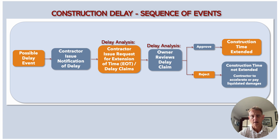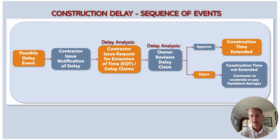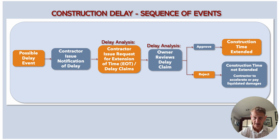The contractor would then need to submit a formal delay claim or extension of time claim. In this delay claim, the contractor needs to analyze the delay and determine the impact and extent of the impact on completion. This claim is submitted to the owner, who would also conduct delay analysis — reviewing the claim and establishing whether the delay event impacted completion and to what extent. If the delay claim is approved, the construction time would be extended. If it's rejected, the construction completion date remains the same and the contractor would have to accelerate the work or face the risk of paying liquidated damages.